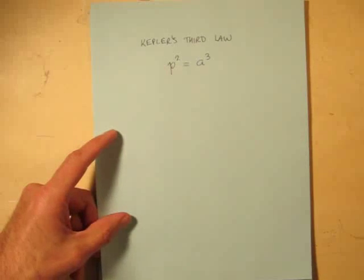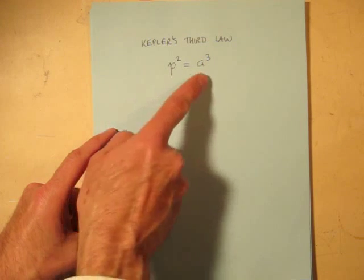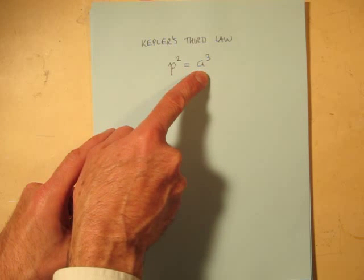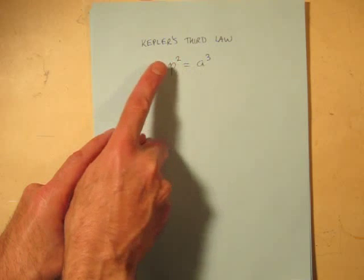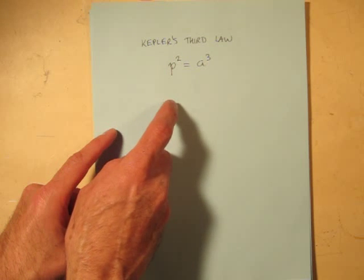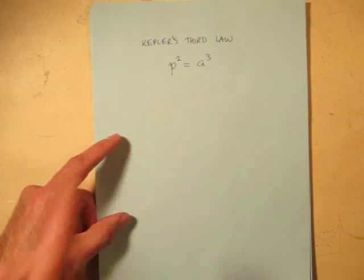We can figure that out because of Kepler's third law. Remember, P is the period of revolution in Earth years, A is the semi-major axis of the ellipse in astronomical units, and Kepler's third law tells us that if we know one we can figure out what the other is: P² = A³.